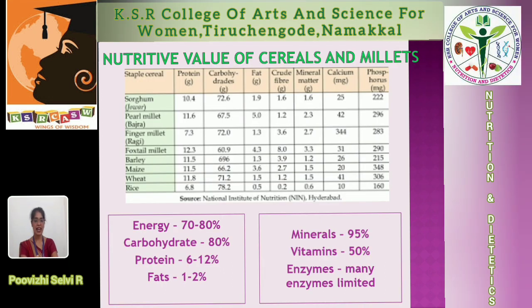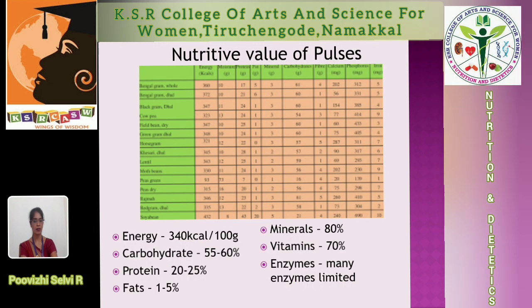This slide shows the nutritive value of cereals and millets. In general, cereals and millets contain energy 70–80%, carbohydrate 70–80%, protein 6–12%, fat 1–2%, and the micronutrients — minerals 95%, vitamins 50% — and also some limited enzymes. Among these, the main minerals and vitamins are required by humans.